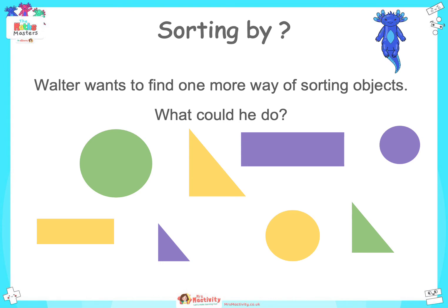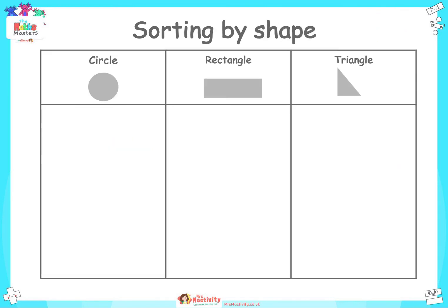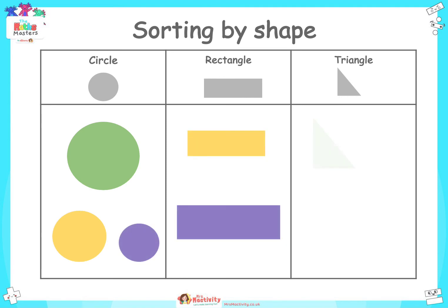Walter wants to find one more way of sorting objects. We've already sorted them by colour and size — what other way could he sort them? This time he could sort them by shape. Here are the shapes: circle, rectangle and triangle. This time there are a mixture of colours and sizes because all we are concerned about is sorting by shape, nothing else.